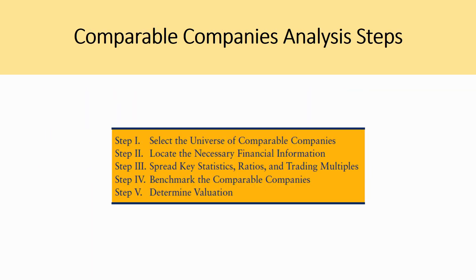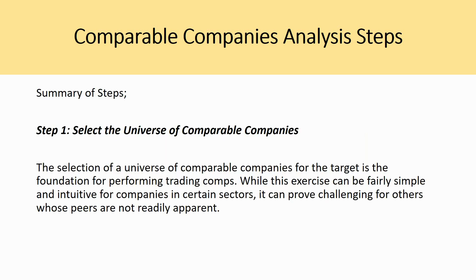The comparable companies analysis is split into five steps. First, you select the universe of comparable companies. Second, you locate the necessary financial information. Third, you spread the key statistics, ratios, and trading multiples. Fourth, you benchmark the comparable companies. And finally, fifth, you determine the relevant valuation.